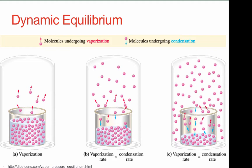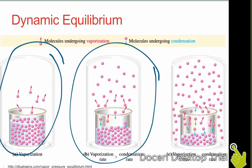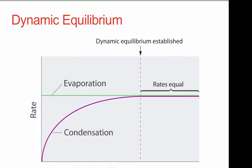Looking at this in a static picture: the first container represents when we first put the molecules in a closed container — only evaporation is occurring because there's no vapor to condense yet. In the second container, once enough vapor has formed, some of it will start to recondense, as represented by the blue arrows. Finally, once equilibrium is reached, the rate at which molecules are leaving the liquid phase equals the rate at which molecules are entering the liquid phase. On the graph, the rate of evaporation and condensation eventually become equal, with condensation starting off with a steep change because vapor needs to form before it can kick in. These processes only reach equilibrium if the container is closed so no vapor can escape.